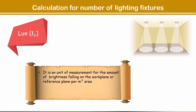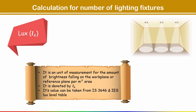The next term is LUX. It is a unit of measurement for the amount of brightness falling on the work plane or reference plane per meter square area. It is denoted by LX. Its value can be taken from IS 3646 and the IES LUX level table, based on your location — whether you are designing for an office space, bedroom, corridor, or dining hall.